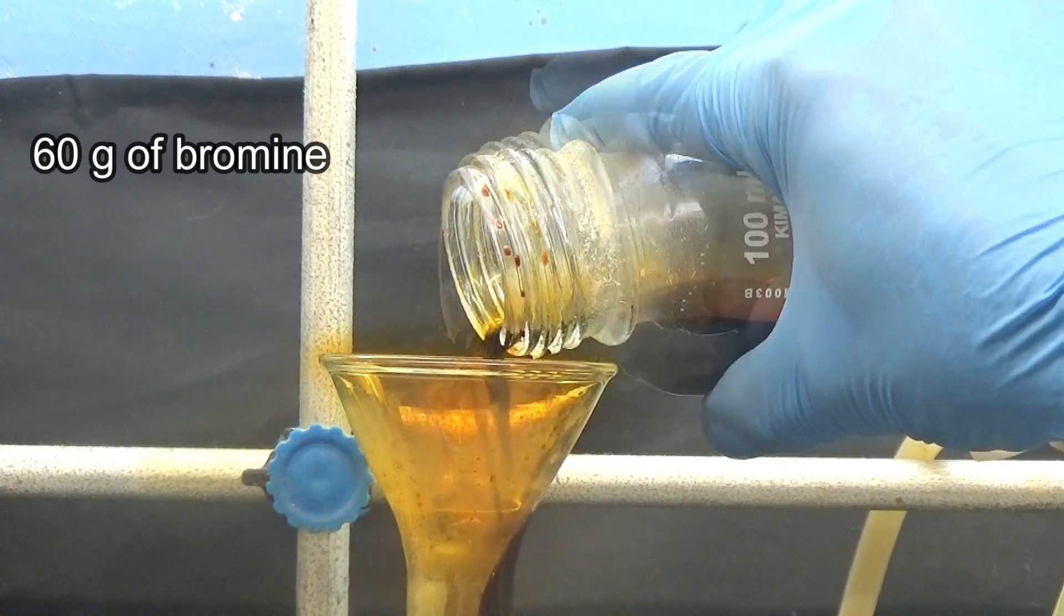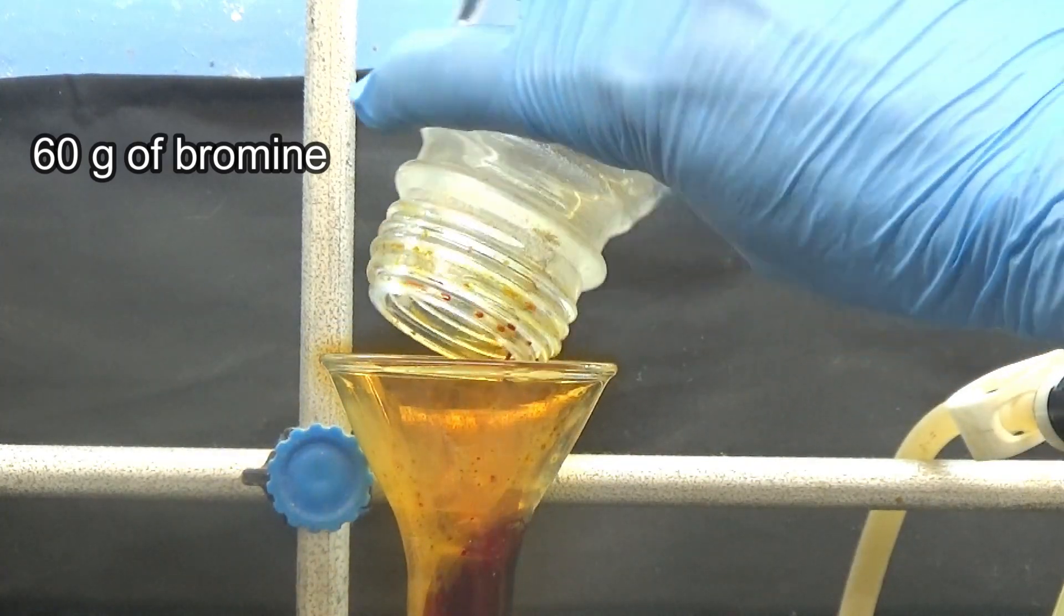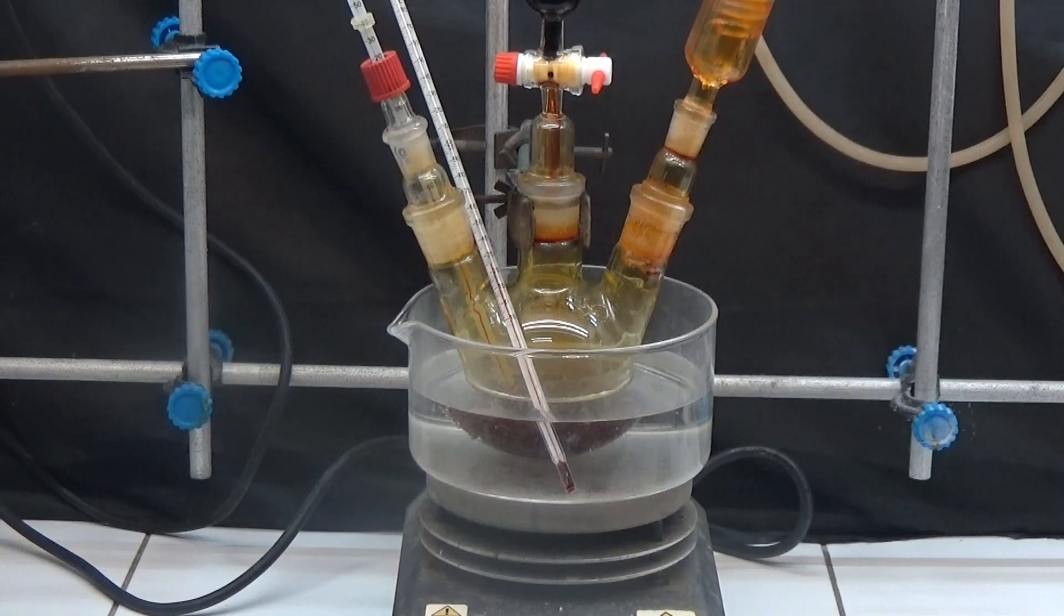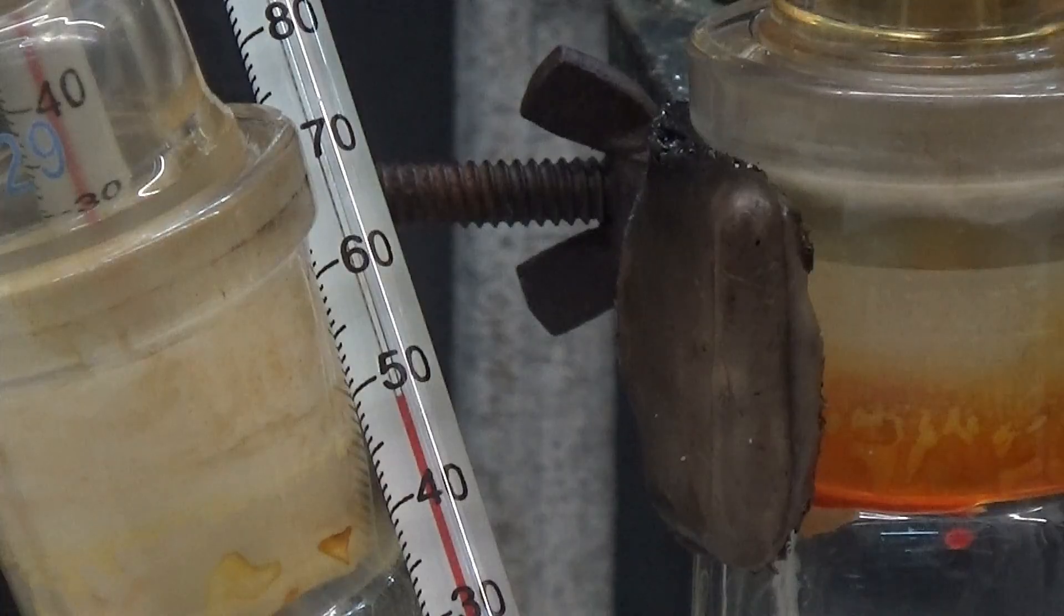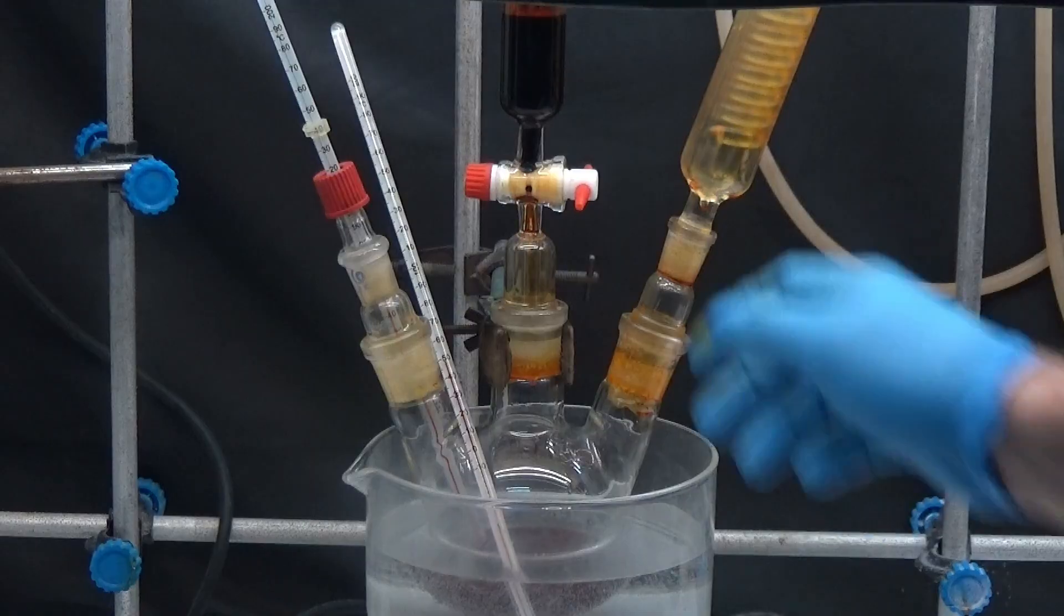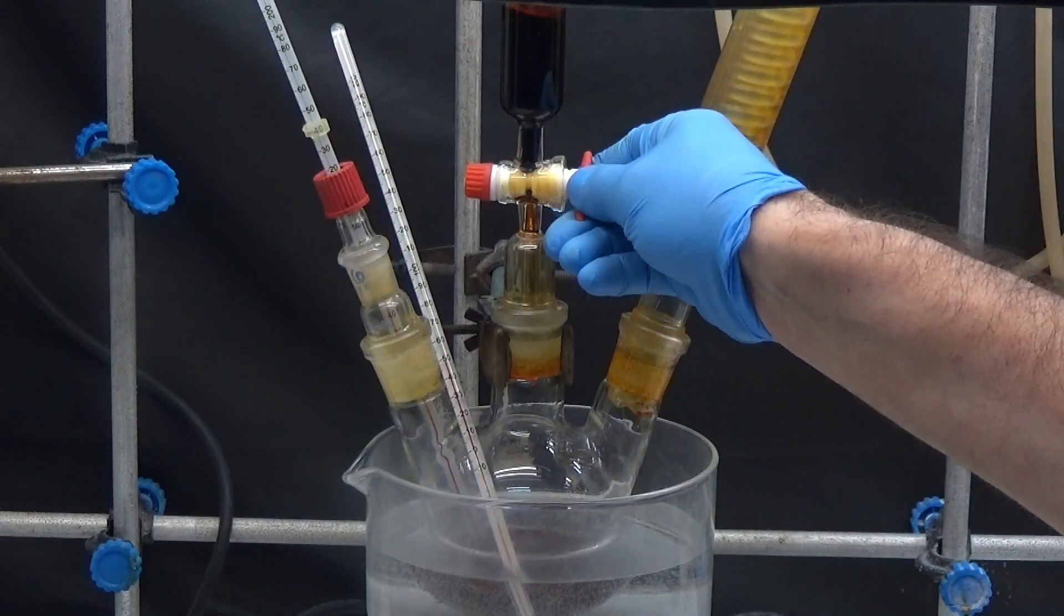After adding 30 grams, we added 60 grams of bromine to the addition funnel. The water bath should be kept below 50 degrees. We slowly add 60 grams of bromine.